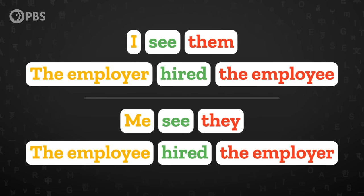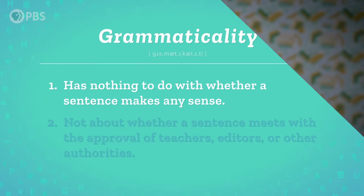Linguists sometimes mark an ungrammatical sentence with an asterisk or star, like *'me see they.' If you're not a native English speaker, you may not feel these same intuitions about these English sentences, but you do have a set of linguistic intuitions for grammaticality in your own native language or languages.